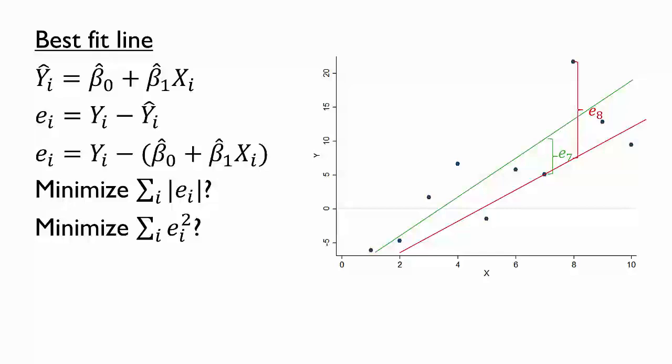For instance, the residual for observation 8 for the red line is about 15 units, so that point alone adds about 225 squared units to the sum of the squared residuals for that line. By contrast, the residual for observation 7 for the green line is about 5 units, so that point adds about 25 square units to the sum of squared residuals for that line. We would likely find that the red line has a higher sum of squared residuals than the green line because the red line has a few particularly large residuals.